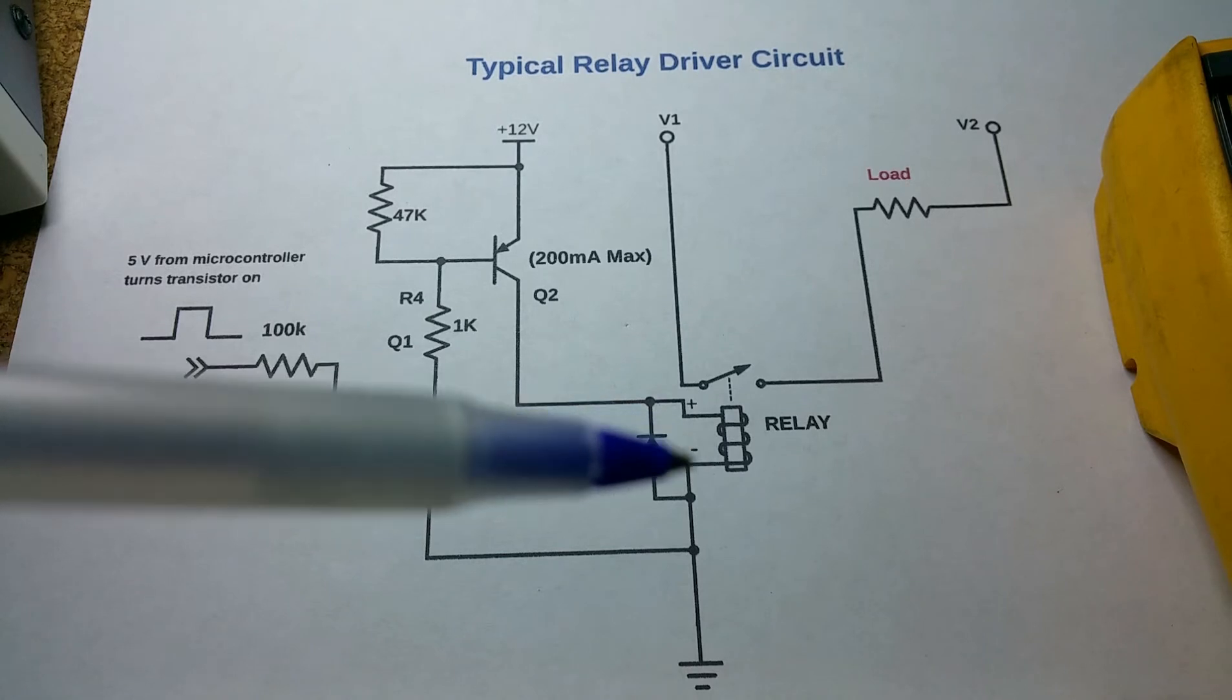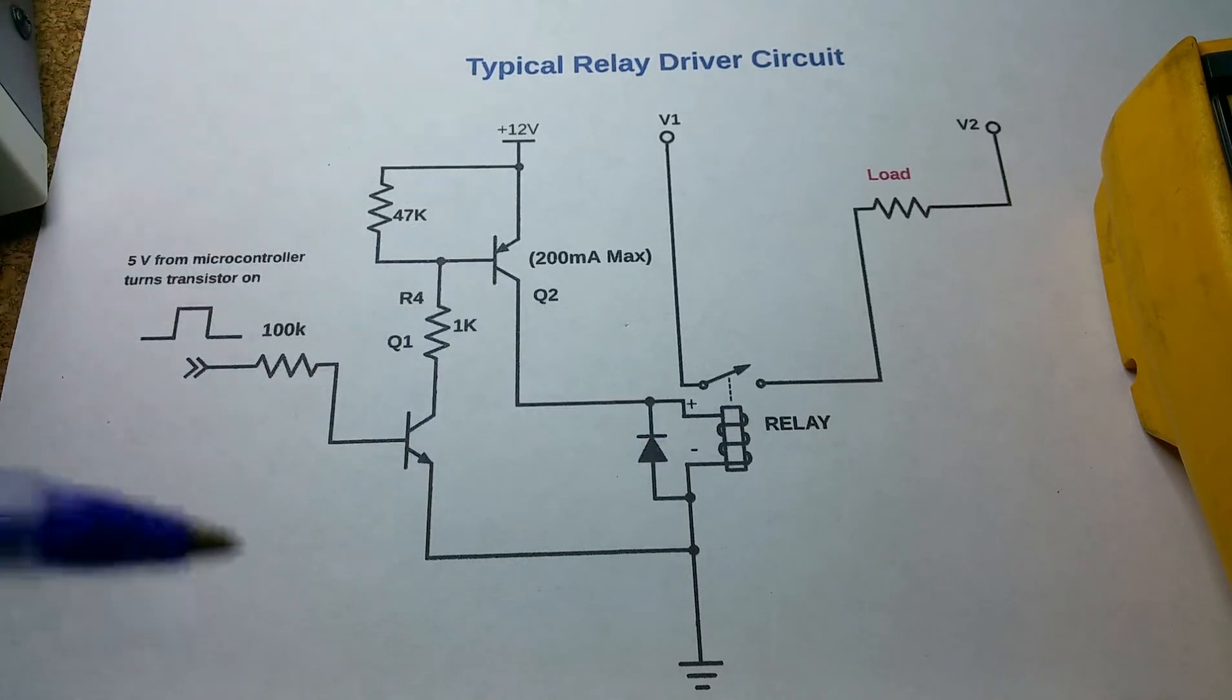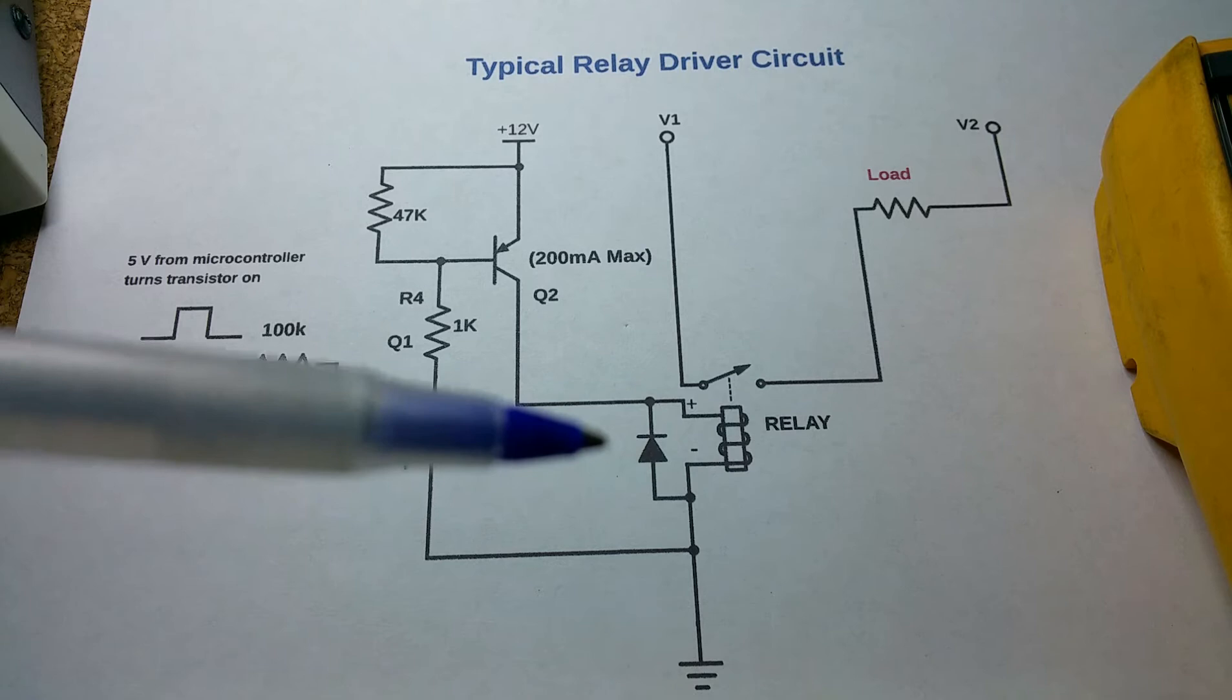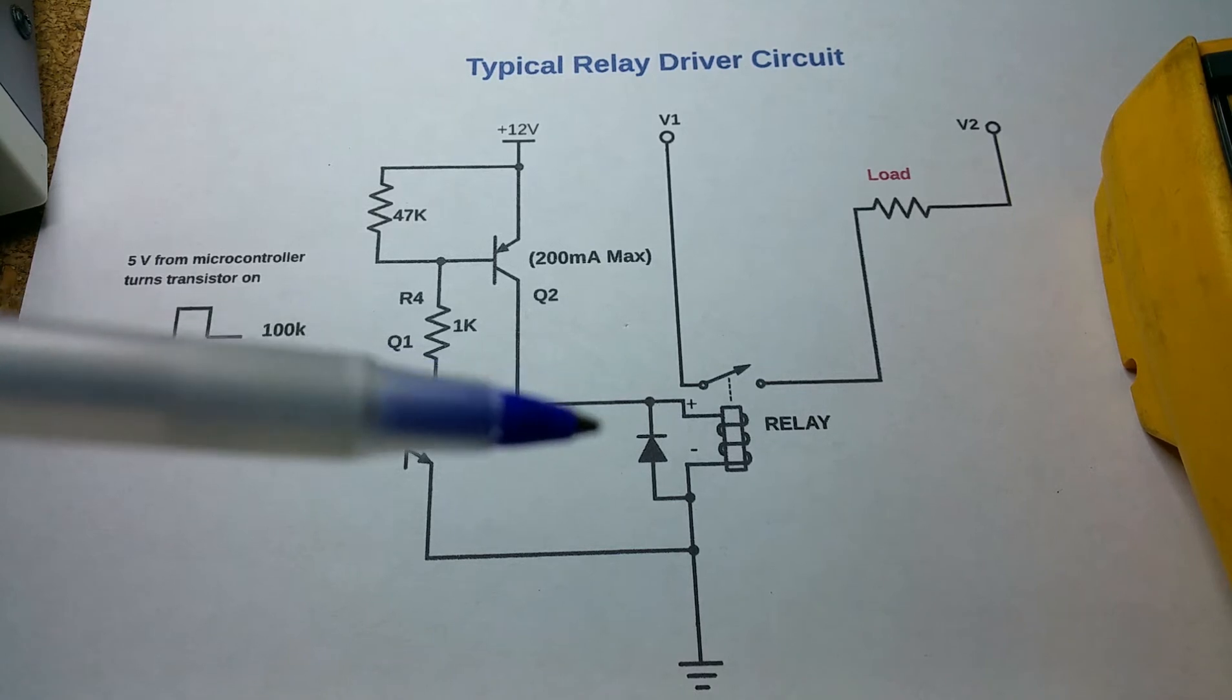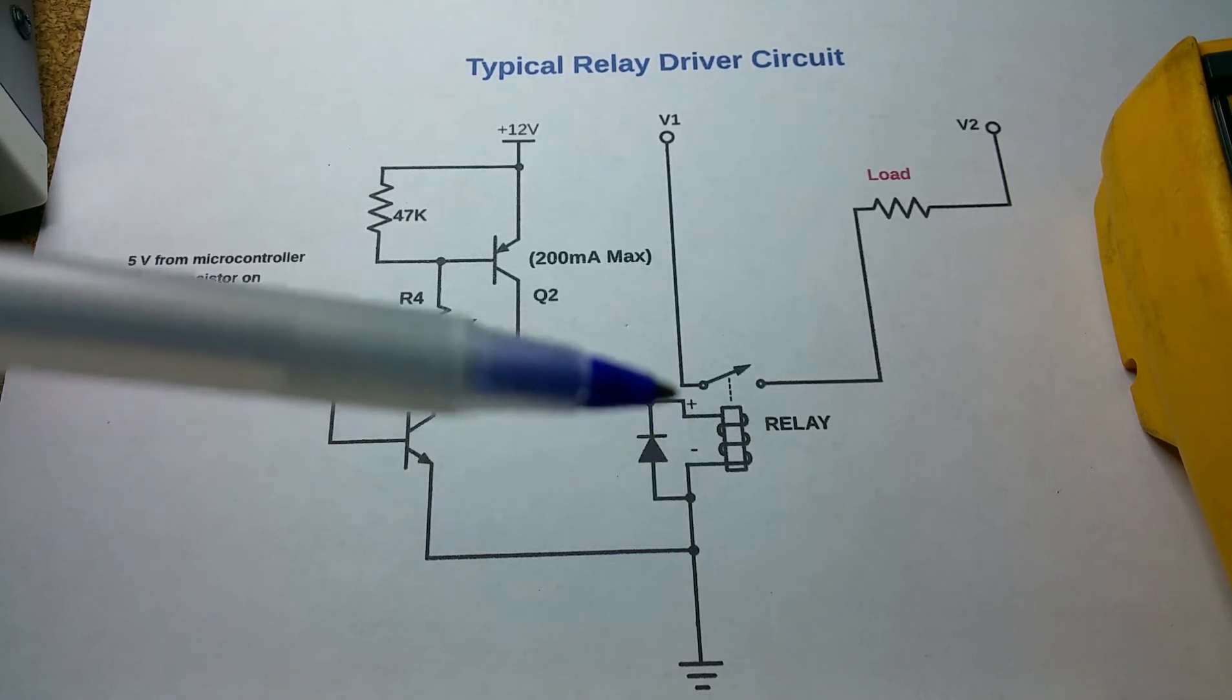You can have a shorted relay, but it's really uncommon in low voltage circuits like this. That's more common when you have higher voltage circuits, like a solenoid valve running on 120 volt AC. You're gonna see commonly shorted coils, but not typically in a circuit like this.